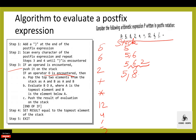Then next is multiplication — multiplication is an operator. If an operator is encountered, pop the two topmost elements from the stack as a and b, and evaluate b multiply a, where a is the topmost element and b is the element below a. So 5 into 8, result is 40. Next, 12 is an operand — if an operand is encountered, push it onto the stack. Then 4 is also an operand — push it onto the stack.